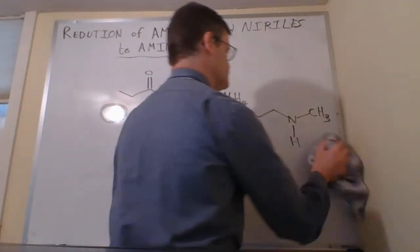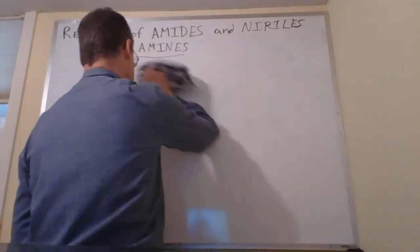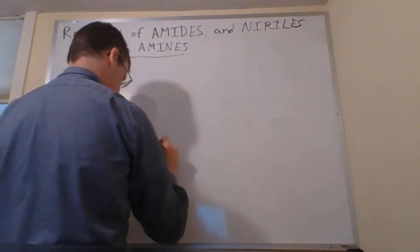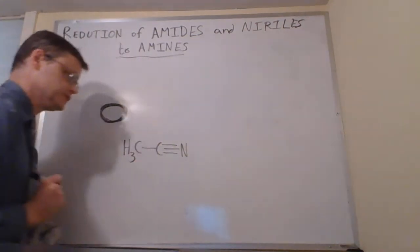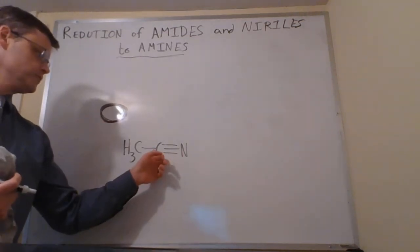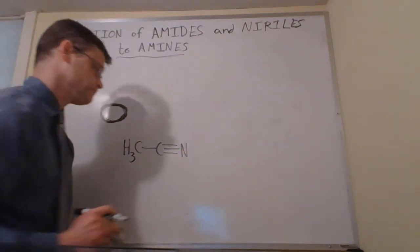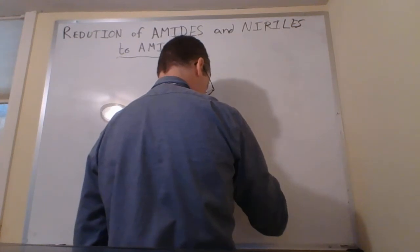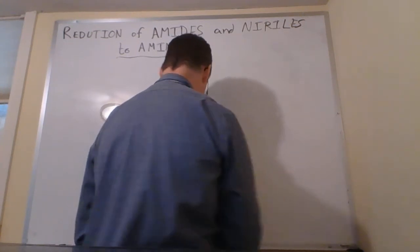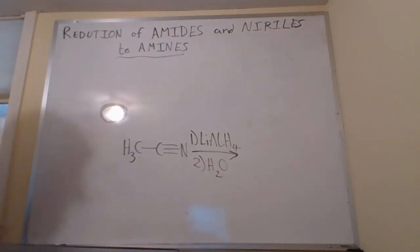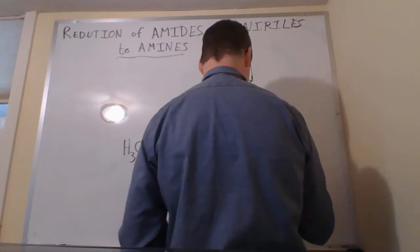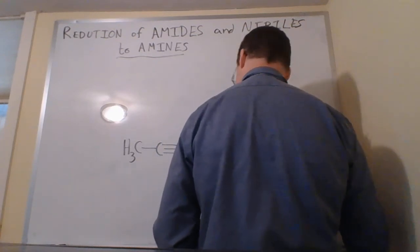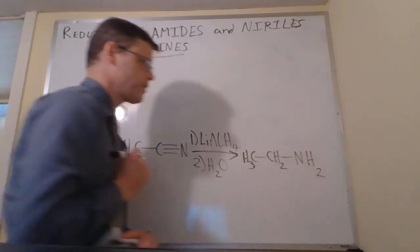We can also do this with nitriles. Let me show you an example with a nitrile. I'll use our simplest nitrile here, acetonitrile. And just as a reminder, a nitrile has this functional group that is a carbon triple bonded to a nitrogen. We're going to use the same conditions for this reduction: our strong reducing agent, lithium aluminum hydride, followed by a water workup. And we're not going to lose any carbons here. We're just doing a functional group interconversion. And here I'm making a primary amine.